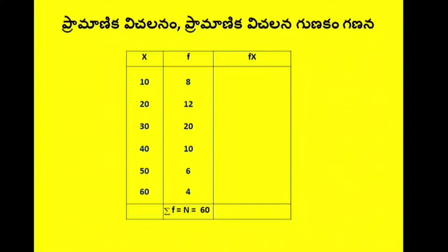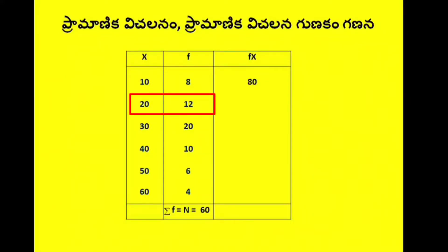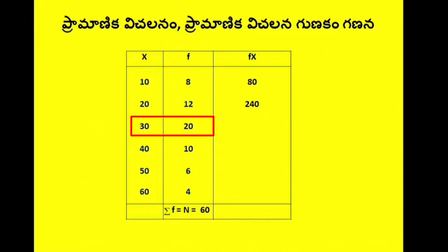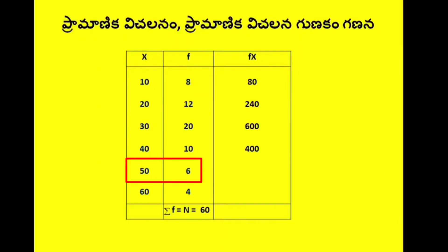Now the fx values are straightforward: 8 times 10 equals 80, 12 times 20 equals 240, 20 times 30 equals 600, 10 times 40 equals 400, 6 times 50 equals 300, and 4 times 60 equals 240.